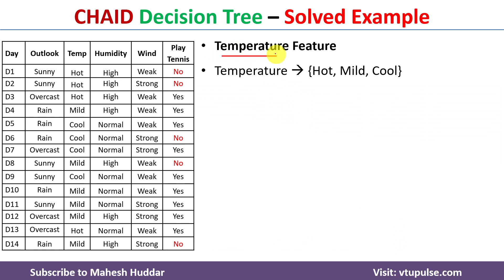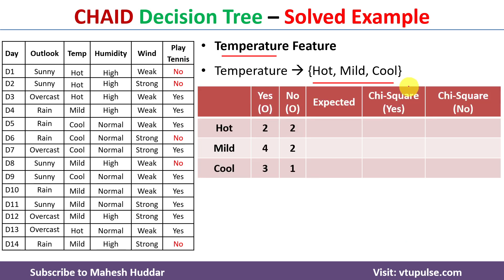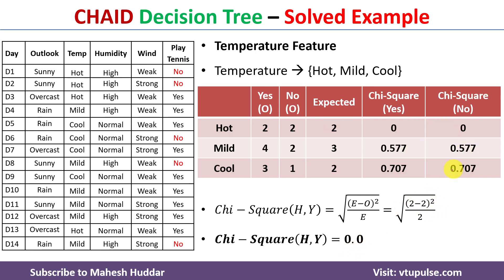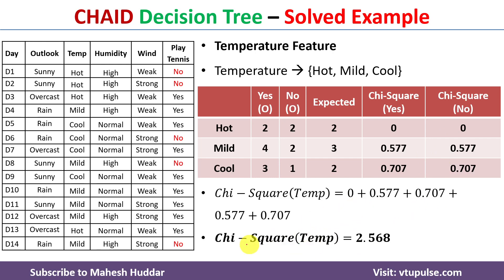Next is Temperature, which has three possibilities: hot, mild, and cool. We count the observed examples for each possibility — 'yes' and 'no' counts for hot, mild, and cool. We calculate the expected value as (yes + no) / 2 for each case; for hot: (2 + 2) / 2 = 2. Then we calculate the chi-square values using sqrt((E − O)² / E). Adding all chi-square values gives chi-square of Temperature = 2.568.